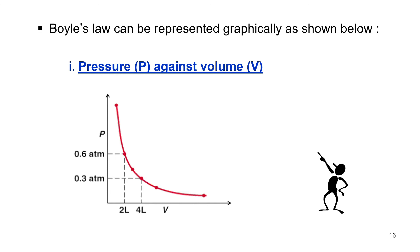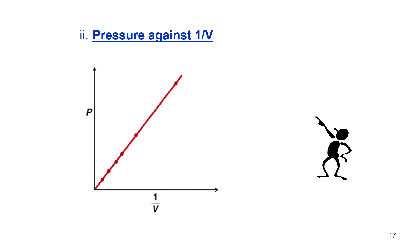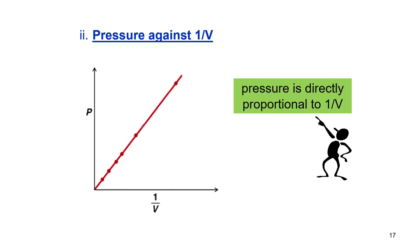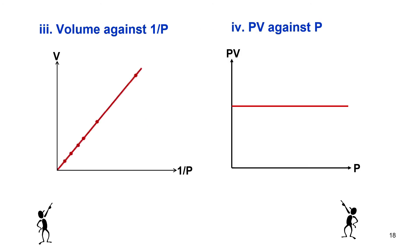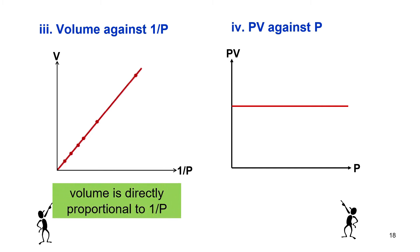Boyle's Law can be represented graphically. A pressure vs. volume graph shows an inverse (hyperbolic) relationship. A pressure vs. 1/V graph gives a straight line, showing pressure is directly proportional to 1/V. A volume vs. 1/P graph also gives a straight line. A PV vs. P graph gives a constant (horizontal) line.